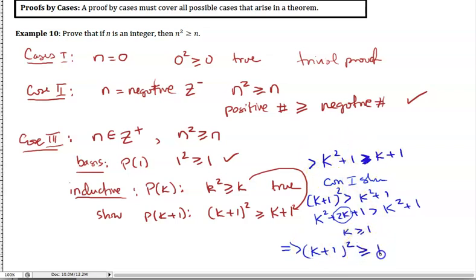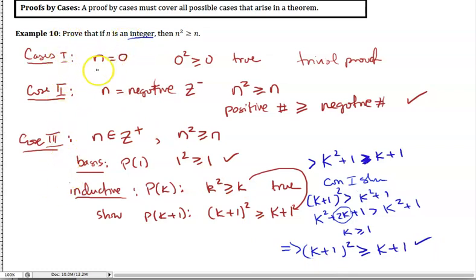We've covered all cases for n being an integer: n = 0, n negative, and n positive, and the statement n² ≥ n was true in all cases. Therefore it must be true for all integers. That's an example of a proof by cases.